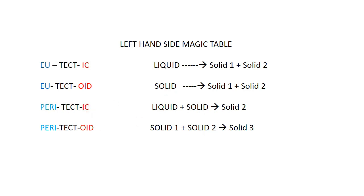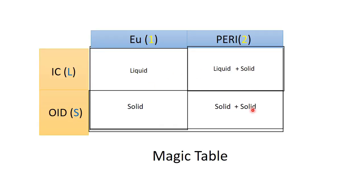In the magic table, I present the prefix of each term in columns and the suffix in rows. The columns contain 'U' and 'peri', while the rows contain the suffixes 'ic' and 'oid'. The rule is: whenever there is a 'U' sound, I assign the number one; whenever there is a 'peri' sound, I assign the number two. Whenever there is an 'ic' sound, the phase is liquid; whenever there is an 'oid' sound, the phase is solid.